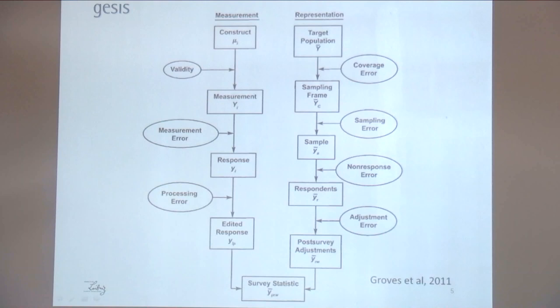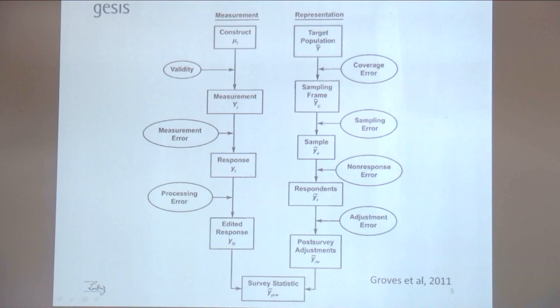When you have done that, you go to the field, you ask your respondents to respond, and during this process different errors can occur — for example, interviewers are not well-trained, or people simply lie due to social desirability biases. Then, when you have collected the responses, you do some pre-processing, automatically or manually labeling responses, and you end up with an edited response. Since you want to learn not about one single individual, you have to move to the representation level.